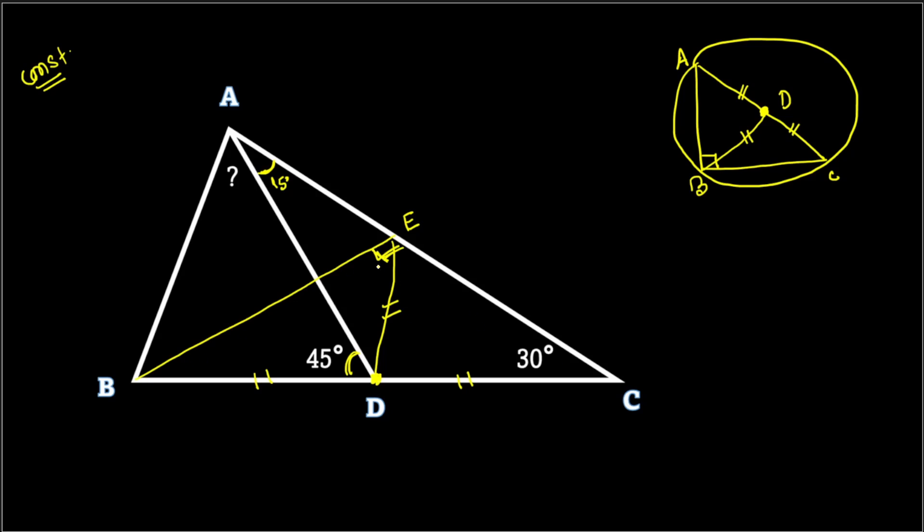In triangle BEC, this one is 90 degrees, this angle is 30 degrees, so this angle must be 60 degrees. In triangle BED we know BD equals DE. If this angle is 60 degrees, this angle must be 60 degrees because this creates an isosceles triangle. An isosceles triangle with one angle 60 degrees converts to 60, 60, 60, an equilateral triangle.